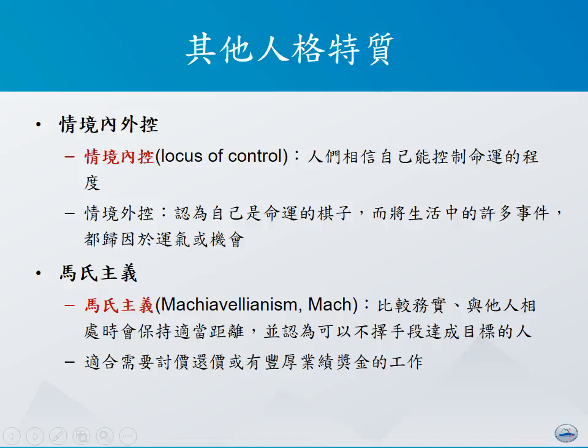除了MBTI以及五大人格特质这两种综合式人格模型之外，还有很多人格特质对于了解一个人的行为有相当重要的影响。第一个是情境内外控（Locus of Control）人格特质：所谓的情境内控，泛指人们相信自己可以控制命运；而情境外控则是认为自己只是命运的棋子。在这两种情形之下，内控的人跟外控的人对很多事情会有不大一样的面对与处理方式。